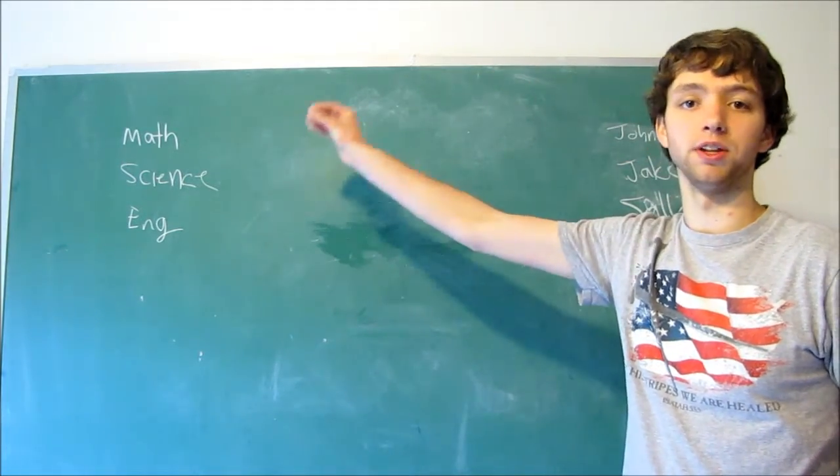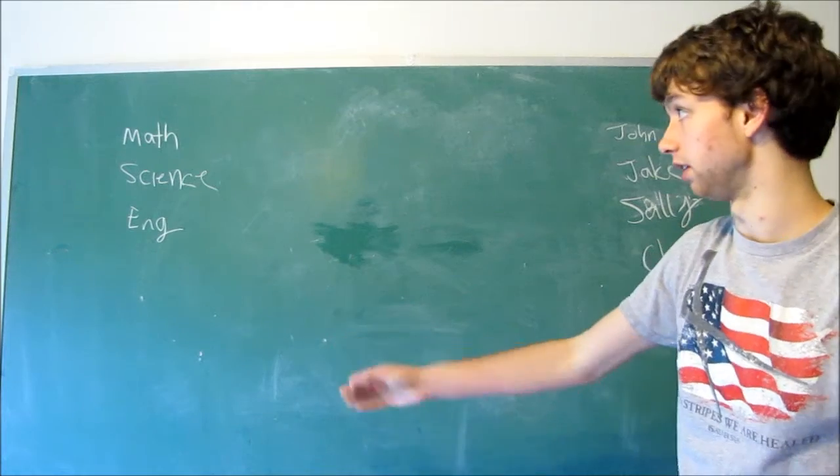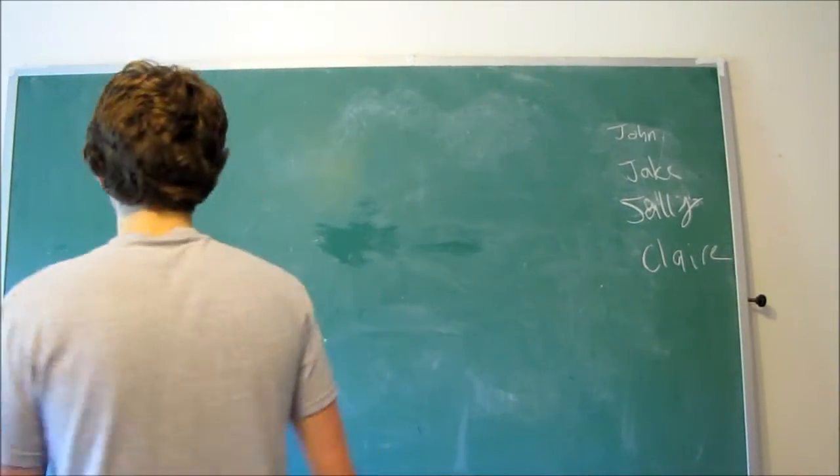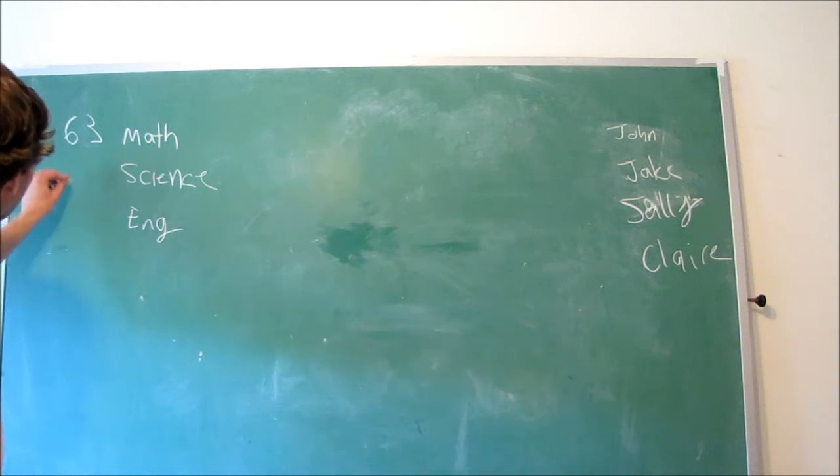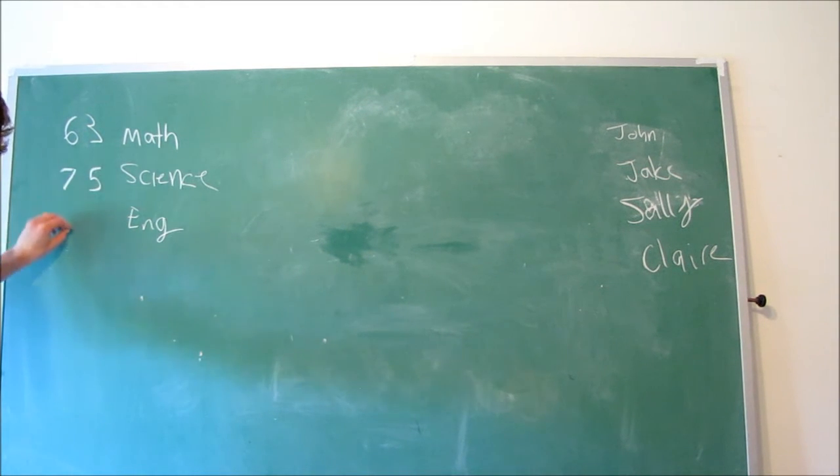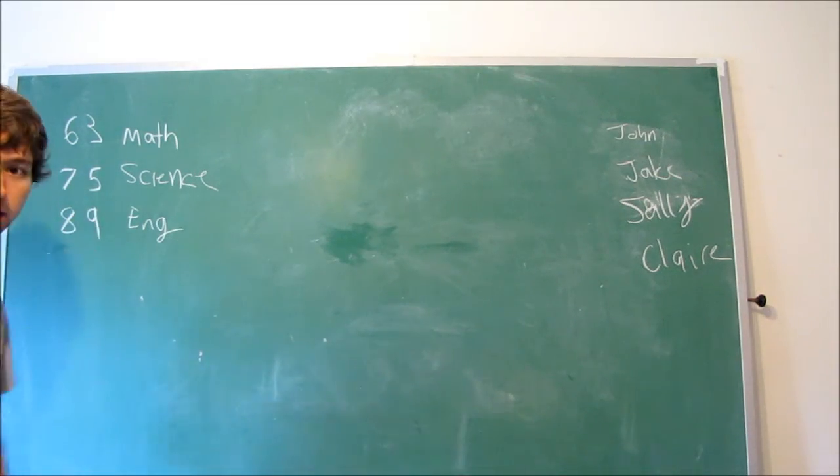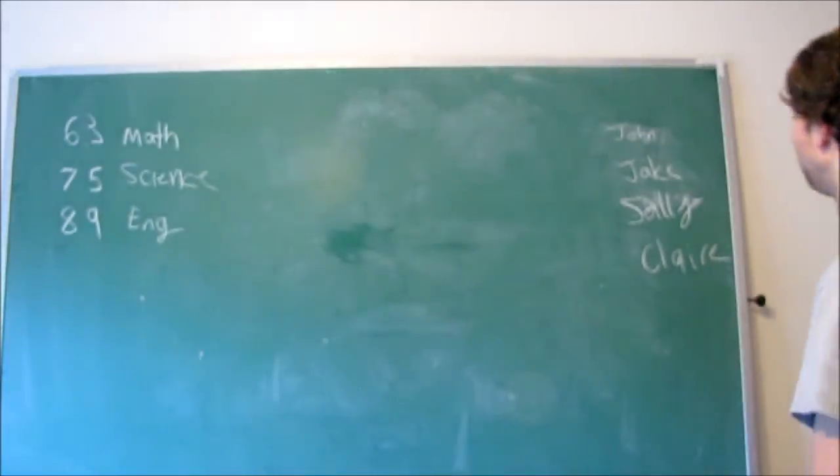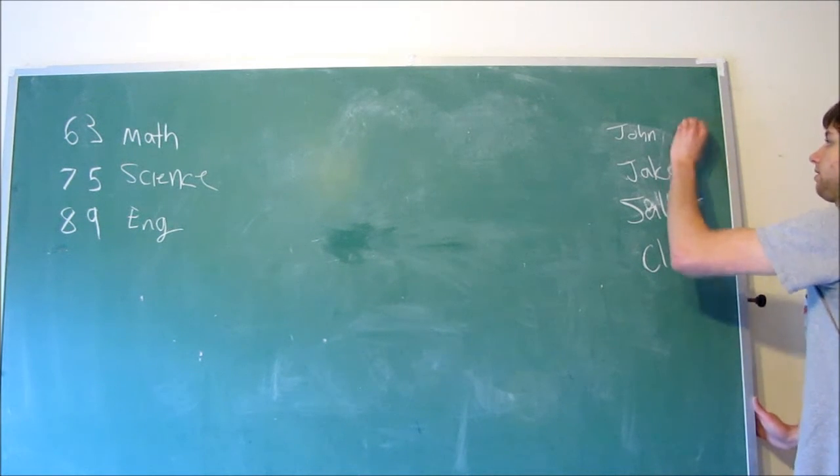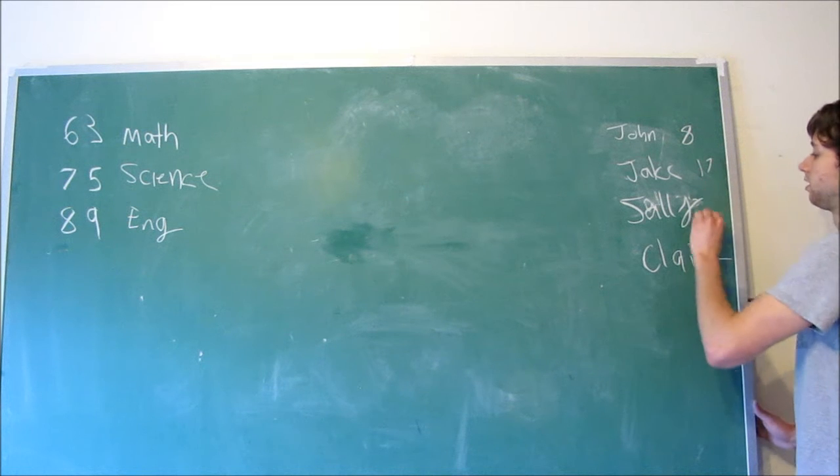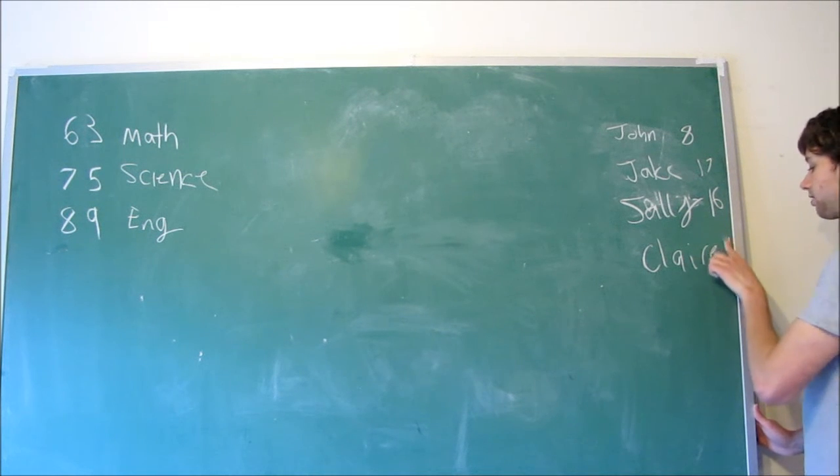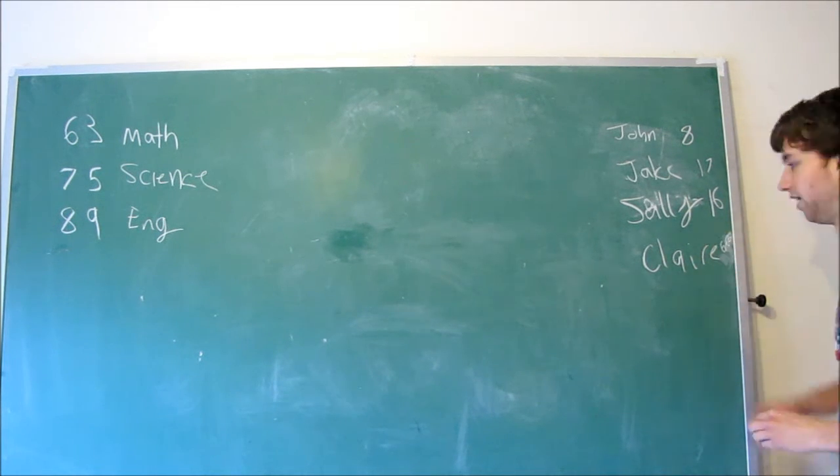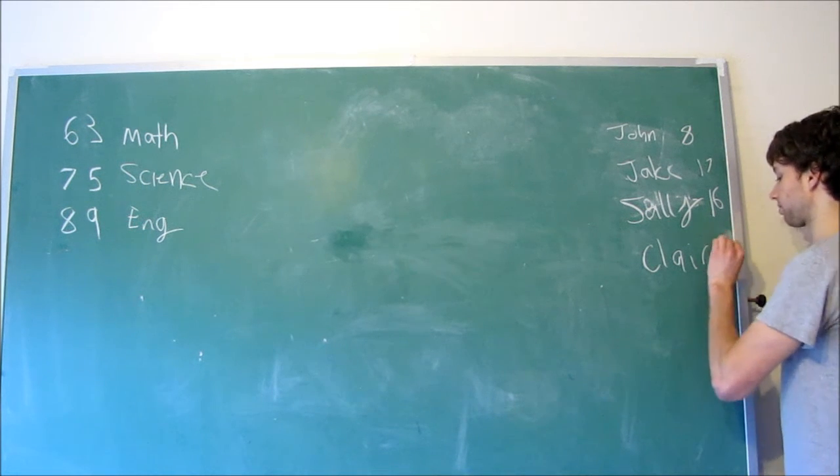We connect these in the middle. First things first, we give them all an ID, because that will be our primary key. We'll just give these random assigned numbers, which is pretty much what a primary key is, a surrogate primary key. We'll give this one 63. This one would be 75. And this one would be 89. We'll do the same thing over here. John will have the ID of 8. Jake, the ID of 17. Sally, the ID of 16. And Claire, the ID of 6.